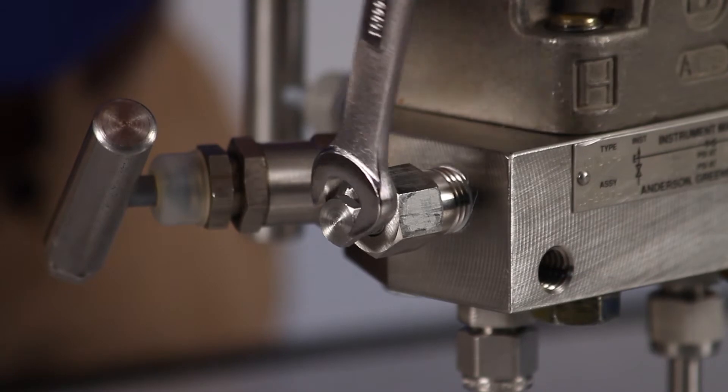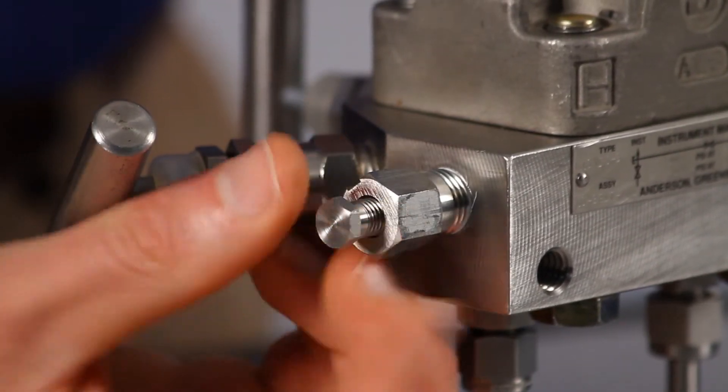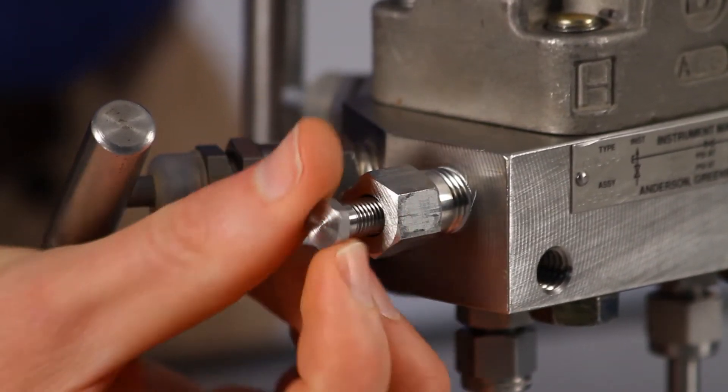Simply remove the bleeder screw in the transmitter vent plug, then thread in the DP transmitter adapter and secure it with a wrench.